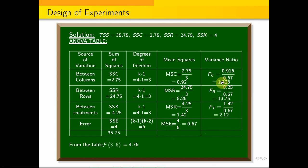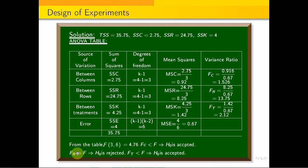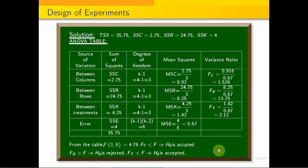For between rows, the calculated F value is 12.31, which is greater than the tabular value of 4.76, so H0 is rejected — rows are significantly different. For between treatments, the calculated F value is 2.12, which is less than the tabular value 4.76, so H0 is accepted. Thank you for watching.